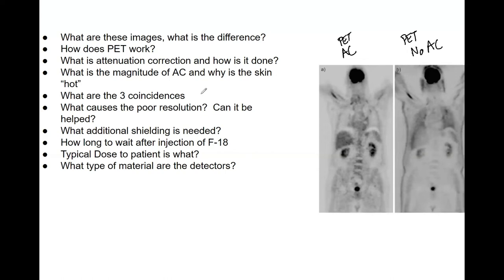What causes the poor resolution and can it be helped? The annihilation between a positron and electron takes place about one millimeter from the positron emission, and that annihilation occurs at 180 degrees plus or minus 0.25 degrees. Because it's not perfectly 180 degrees, this limits resolution to about two millimeters. Since this is a fundamental property of how annihilation works between a positron and electron, it cannot be helped — that is the fundamental limit of PET resolution.